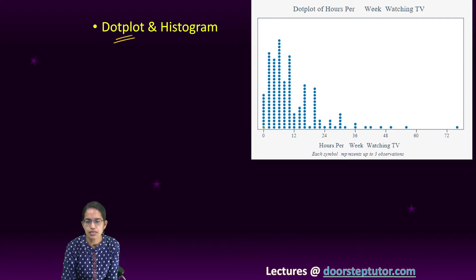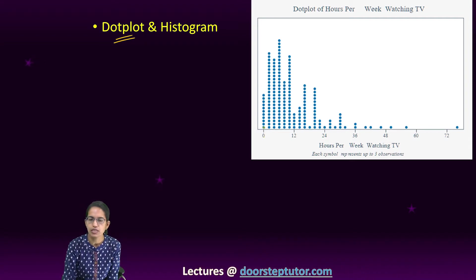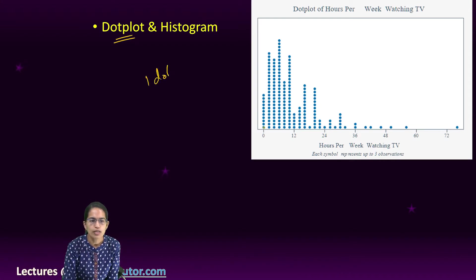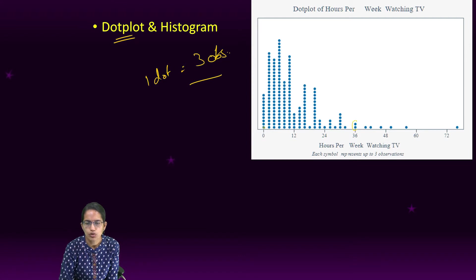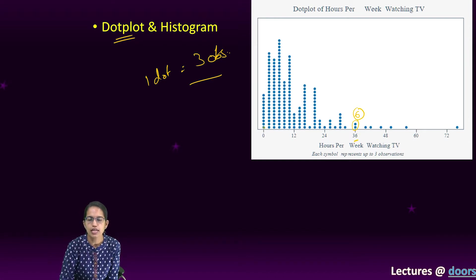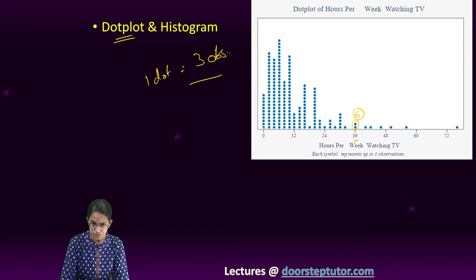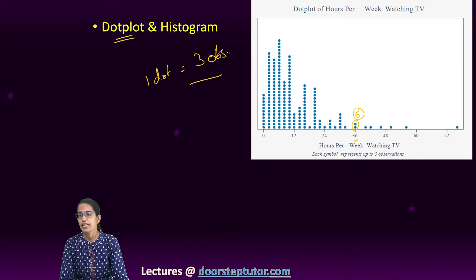One dot would represent a certain number of observations—there could be two observations, three observations. So let's say one dot represents three observations. In this case where I have drawn two dots, it would represent six observations, indicating that six hours of TV per week is being watched by six people.